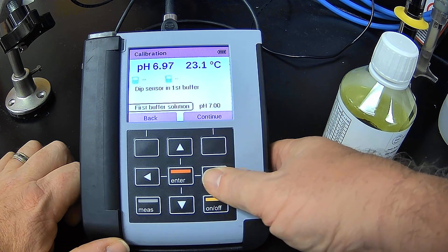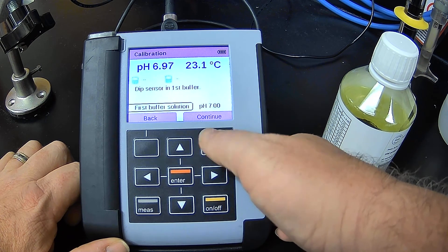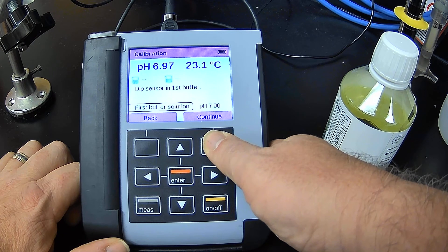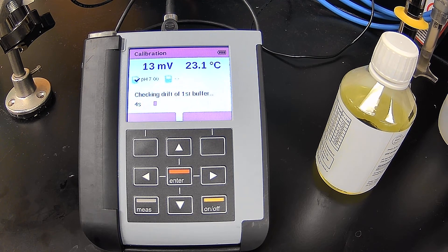If I were in a buffer 4 at this moment, I could come over and change it. But of course, I'm not. I'm in a buffer 7. I hit enter. Continue. While that's doing that, I'm going to open up the buffer 4 so I can do my second point of calibration.